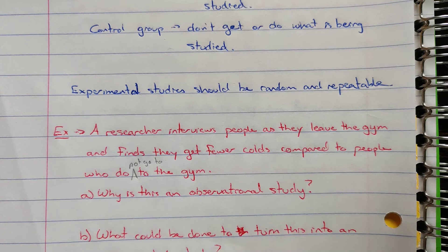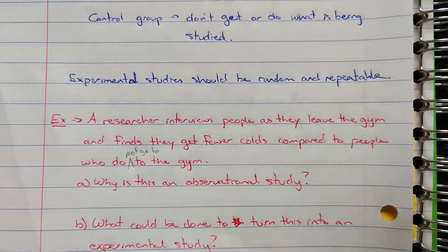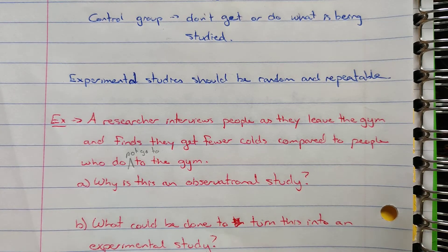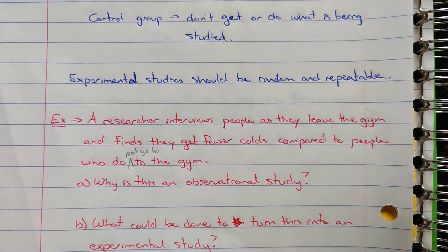For an example here, if a researcher interviews people as they leave the gym and finds they get fewer colds compared to people who do not go to the gym. Note the little change there. Why would this be an observational study? People are walking out of the gym and the researcher's interviewing them and determines they get fewer colds compared to people who do not go to the gym.